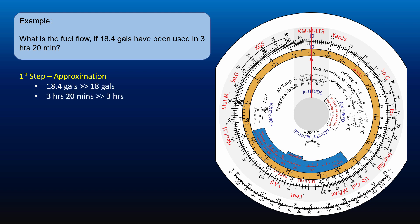And round up 3 hours 20 minutes to 3 hours. Then mentally divide 18 gallons by 3 hours, which gives us somewhere in the region of 6 gallons per hour.